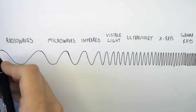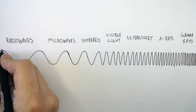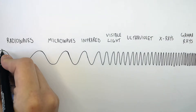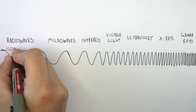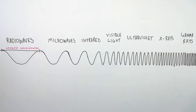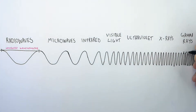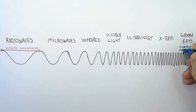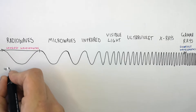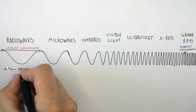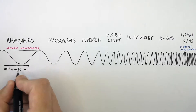We're now going to compare the wavelengths of the waves within the electromagnetic spectrum. The radio waves have the longest wavelengths, and the gamma rays have the shortest wavelengths, as you can see here. Radio waves can have a wavelength of between 10 to the power of 4 meters and 10 to the power of minus 1 meters.